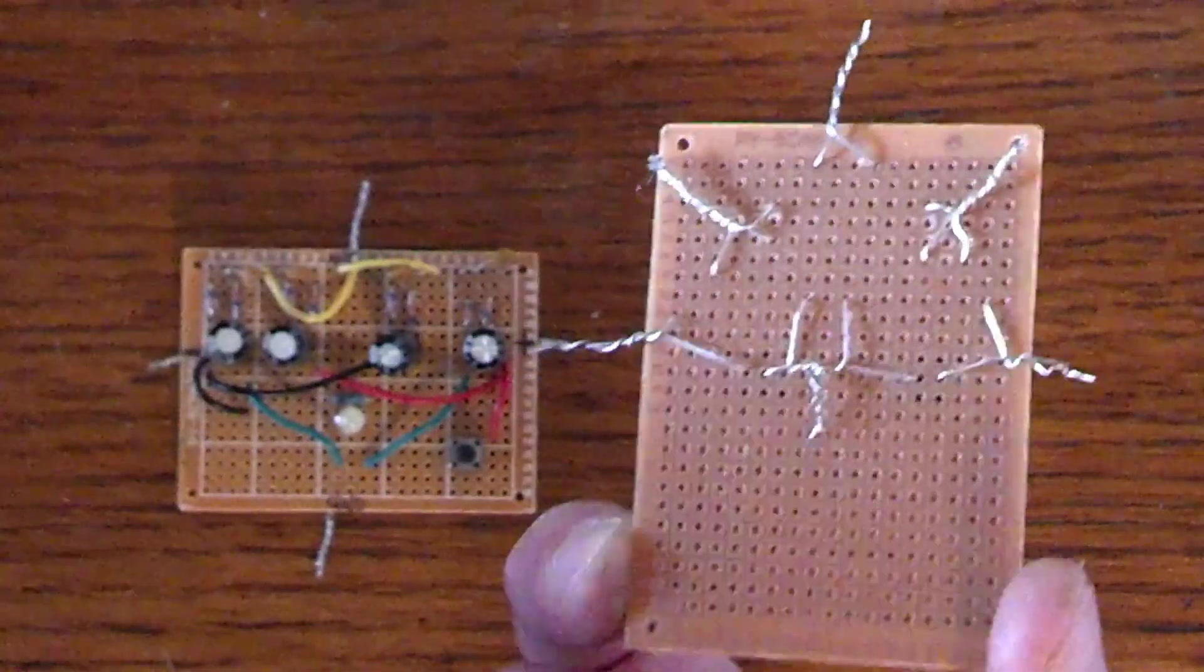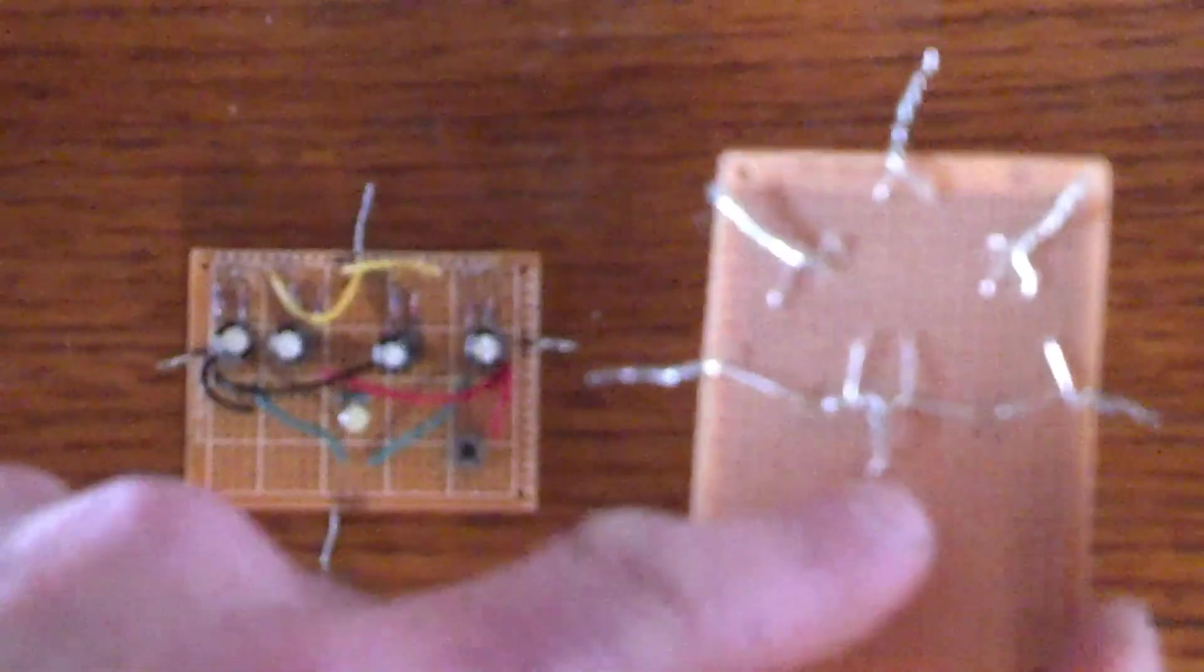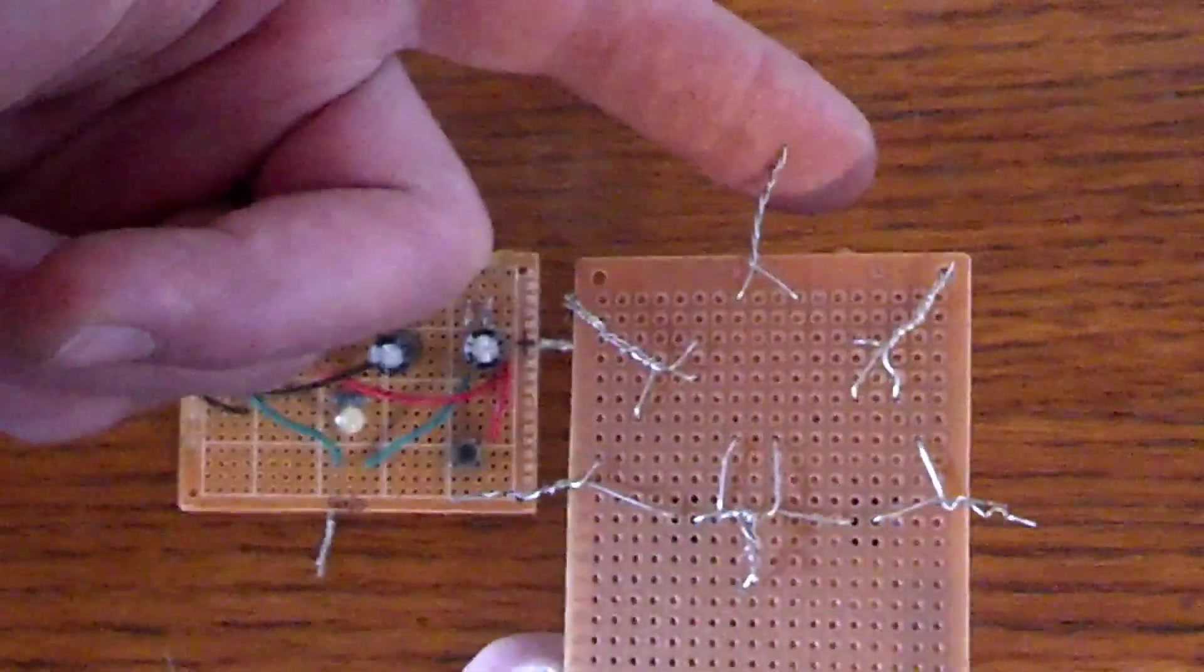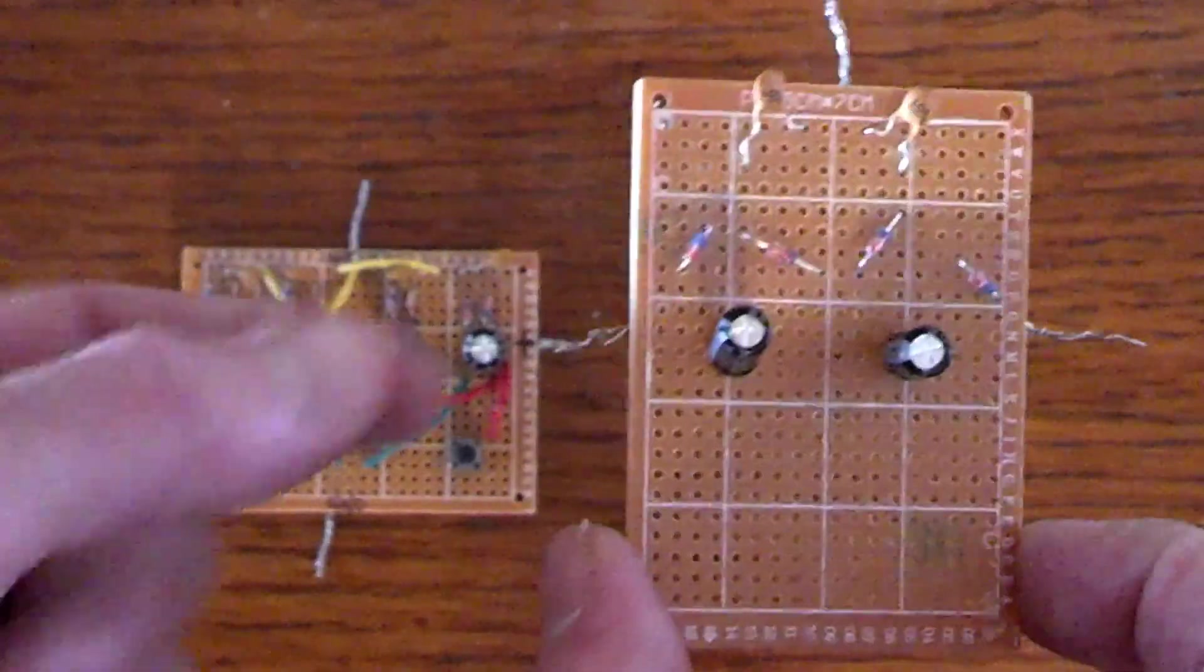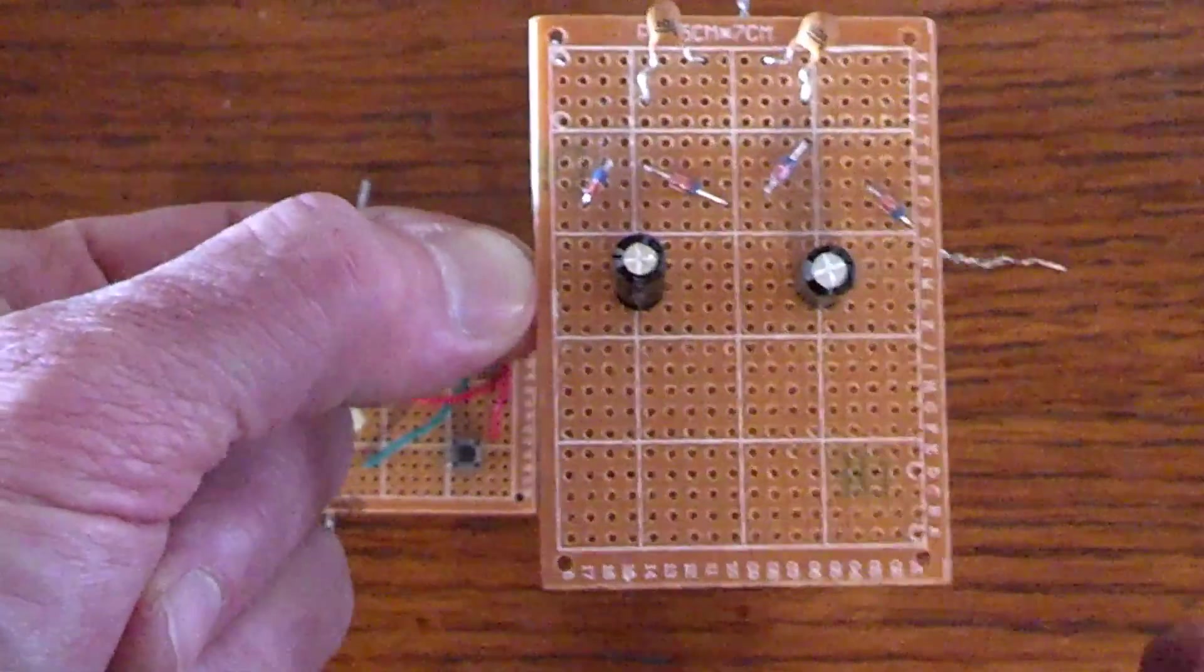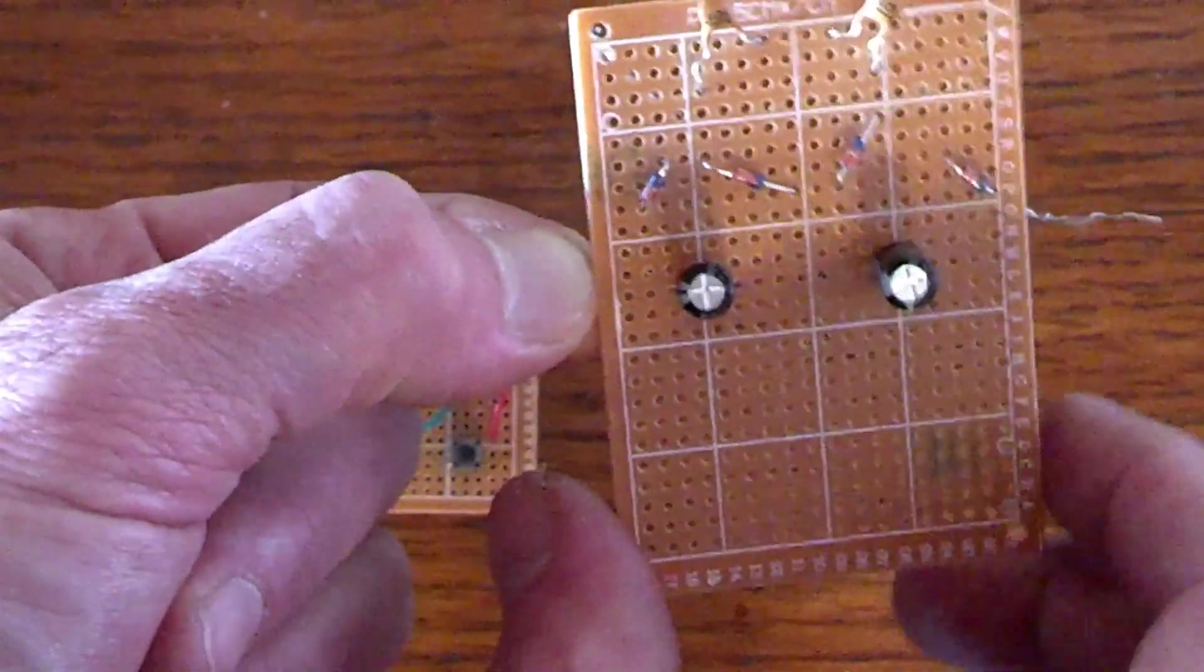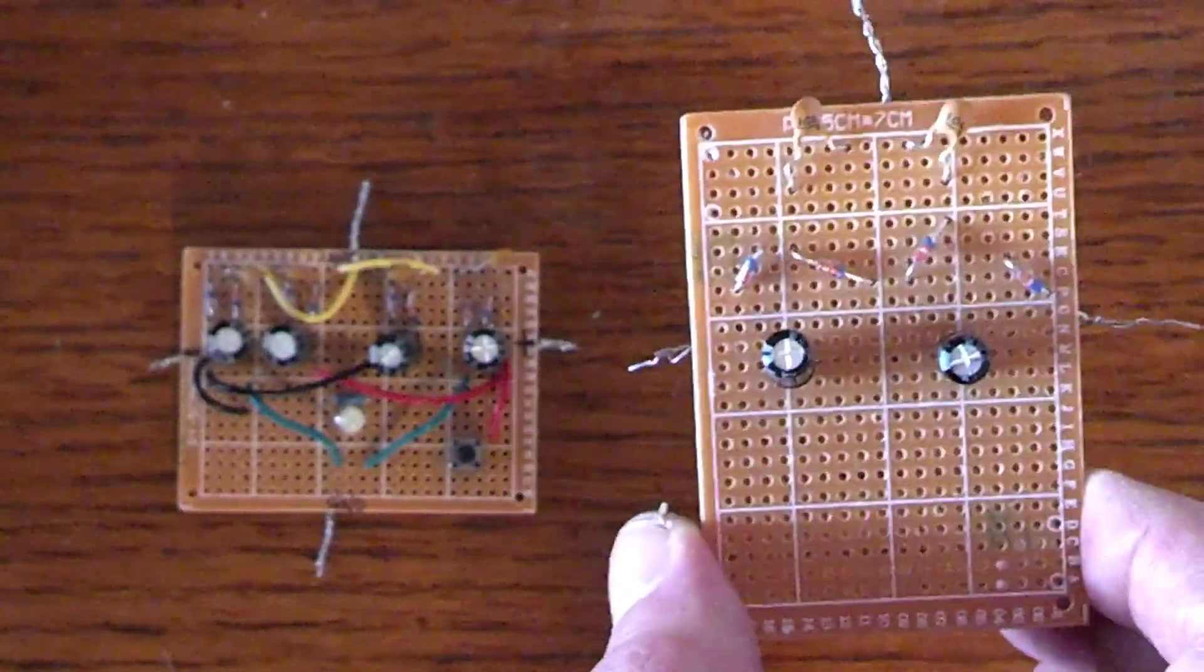And take a look under here. Basically what we got here is the ground will connect here. An antenna connects right here. And here you're going to have your DC minus out and DC plus out. Alright. So that's the first one I created.